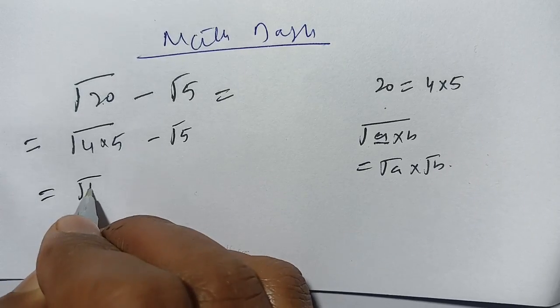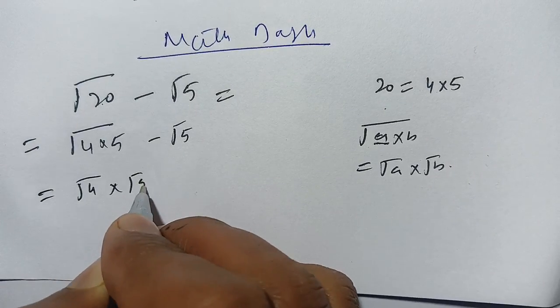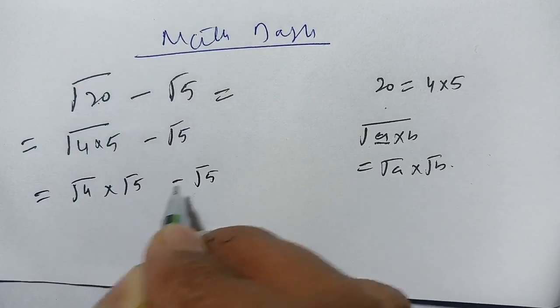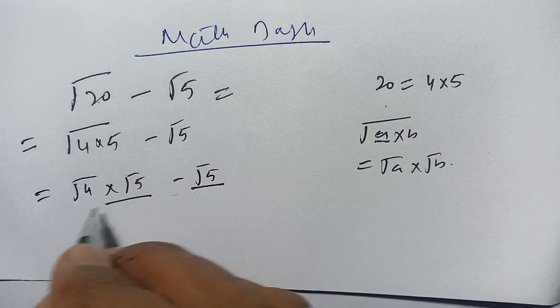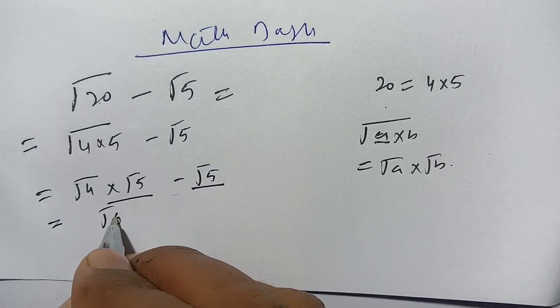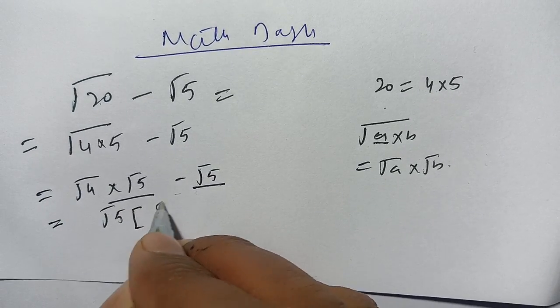And from this term and from this term, we get square root of 5 common. We get square root of 5 into square root of 4 minus 1.